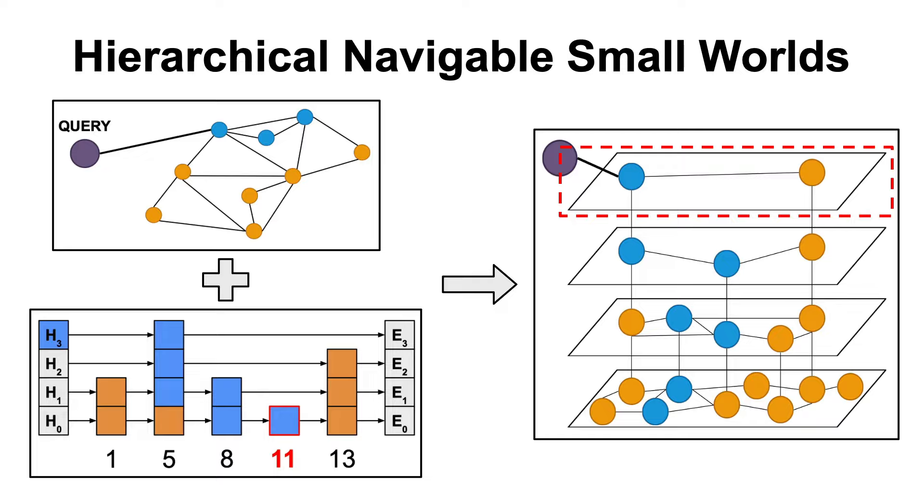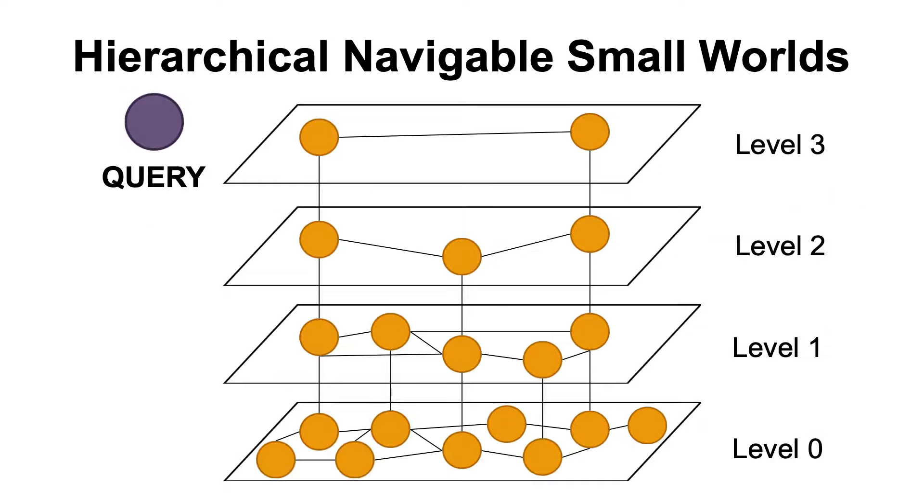So, how does the search work in this graph? Suppose we have a query, just like before, and we want to find the closest k nodes. To do that, we again select a random entry point in the upper level of this graph, and then we visit it. Now, we compare the cosine similarity of this node and all of his neighbors with the query, and we obtain, for instance, that this node is closest, so we go down.